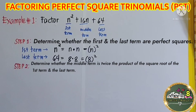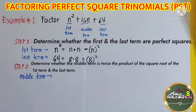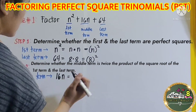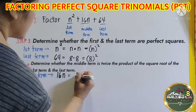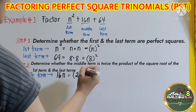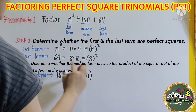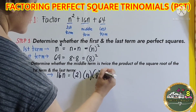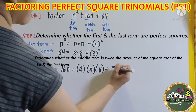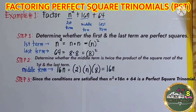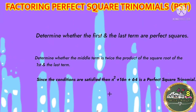For step 2, determine whether the middle term is twice the product of the square root of the first term and the last term. Our middle term is 16n. The middle term should be equal to twice the product of the square root of the first term, which is n, and the square root of the last term, which is 8. Multiplying: 2 times n times 8 is equal to 16n, and that is equal to the middle term. For step 3, since the conditions are satisfied, then n squared plus 16n plus 64 is a perfect square trinomial.